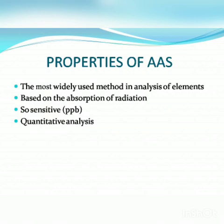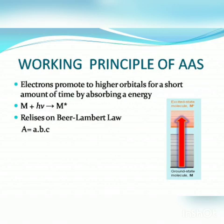Concentration measurements are usually determined from a working curve after calibrating the instrument with standards of known concentration. Atomic absorption is a very common technique for detecting metals and metalloids in environmental samples.